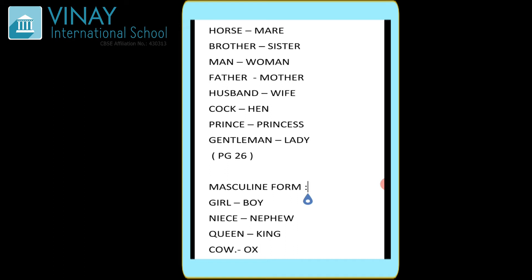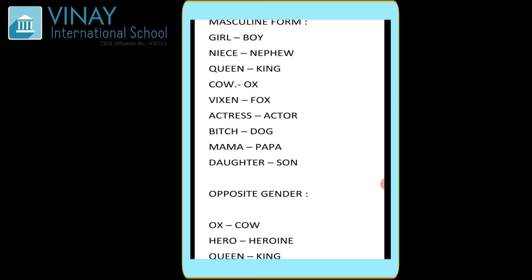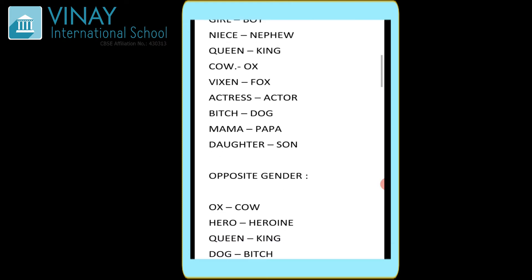Moving on to the second question: give the masculine form of the following. First question is girl — ladki ka masculine form ladka, boy. Second is niece — uska masculine form nephew. Now what is niece? That is a feminine form. If you have a mama, aapke mama honge toh aap unke kya lagogi — bhatiji. Toh bhatiji is a niece if you are a girl. But if you are a boy, toh aapke mama aapko kya kehke pukaarenge — bhatija, that is nephew. So just remember: if it's a girl then niece, but a boy that is nephew.